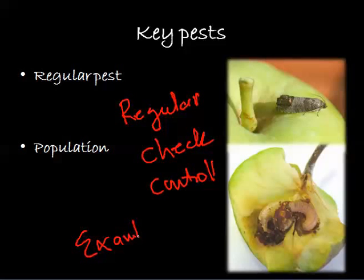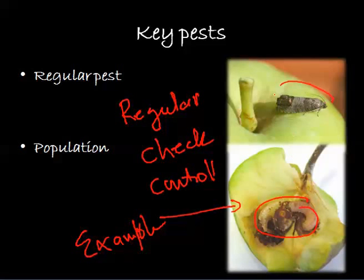For example, the apple codling moth is a good example of a key pest or regular pest.